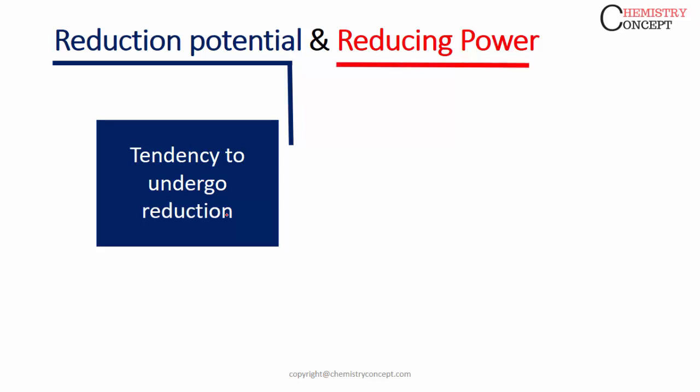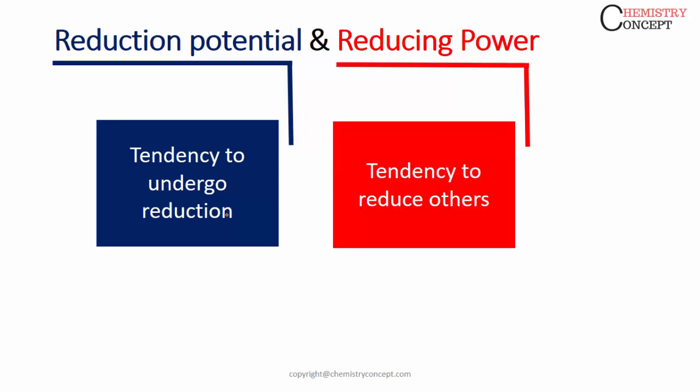While reducing power is the tendency of the element to reduce others. That means reduction potential is tendency to accept electrons, while reducing power is tendency to lose electrons. Obviously, these two are opposite things, so anything which has high reduction potential will have low reducing power.